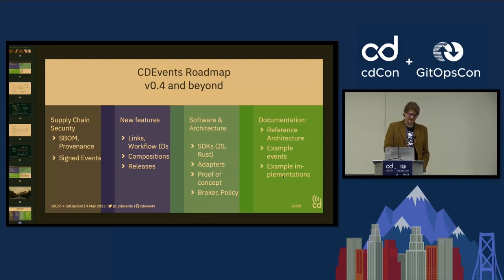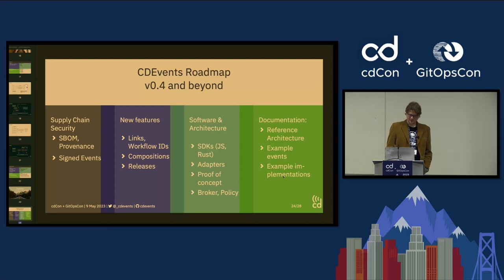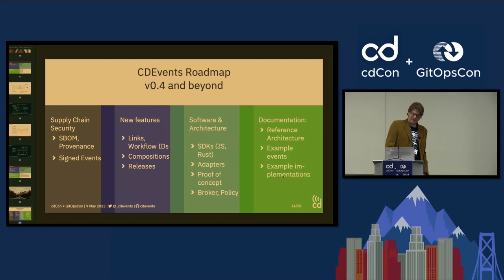Another roadmap feature is the ability to sign events themselves, so you can trust that event content has not been tampered with. This becomes important if you rely on these events for workflow execution decisions. We were also discussing with the CNCF App Delivery TAG whether a sequence of events could serve as an attestation of an artifact — but you need to be able to trust your events for that.